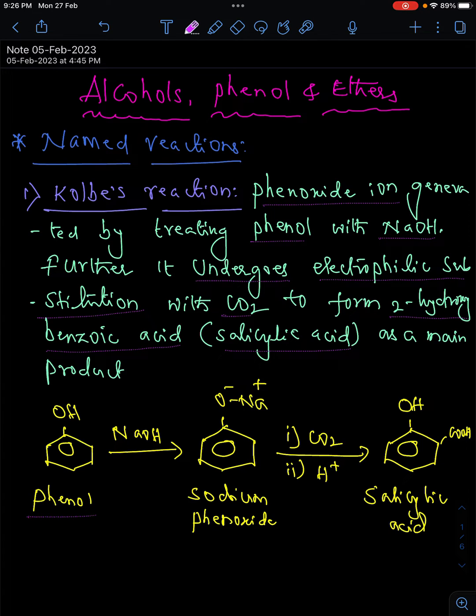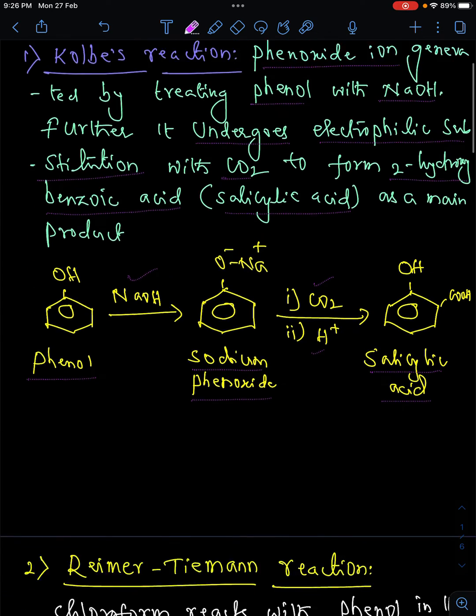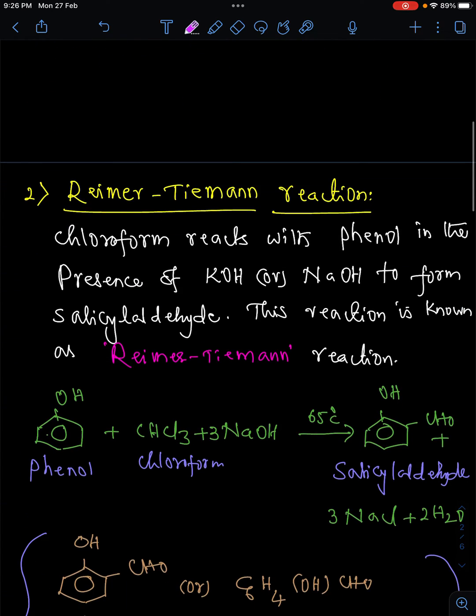In this Kolbe's reaction, first phenol is treated with sodium hydroxide, then we'll get sodium phenoxide. This sodium phenoxide is first treated with carbon dioxide followed by acid hydrolysis to get salicylic acid, which is also called 2-hydroxy benzoic acid or ortho hydroxy benzoic acid.